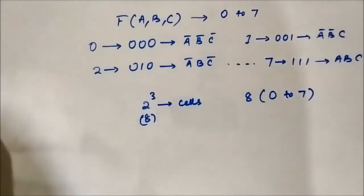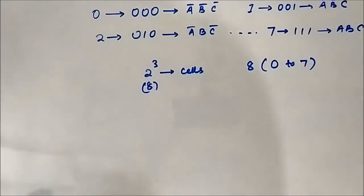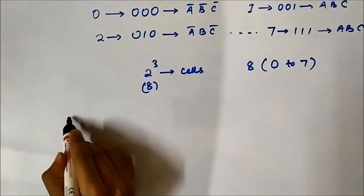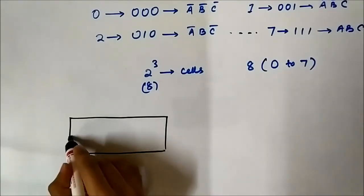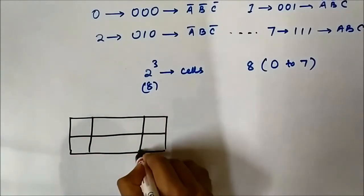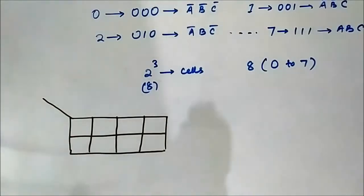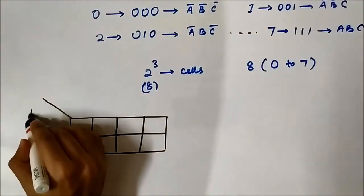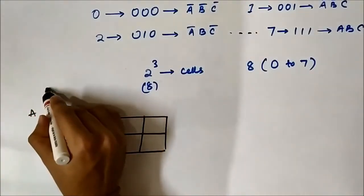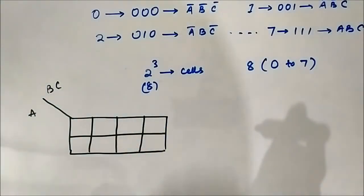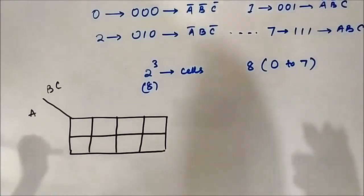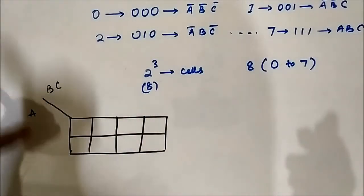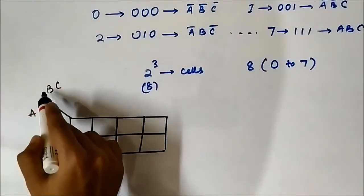The three-variable K-map will look something like this. One side will contain a single variable and the other side will contain two variables. The horizontal component and the vertical components represent some binary values, just like in the two-variable K-map. Here the horizontal component consists of a single variable, and the vertical component consists of two variables.